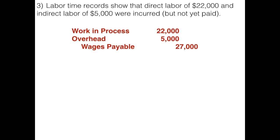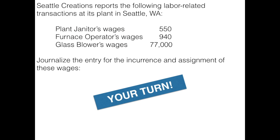Now I'd like for you to try one. Seattle Creations reports the following labor-related transactions at its plant in Seattle, Washington. We have plant janitor wages, furnace operator wages, and glass blower wages. We need to journalize the entry for the incurrence and assignment of these wages — that's one compound entry for all of this labor, just like the prior example.